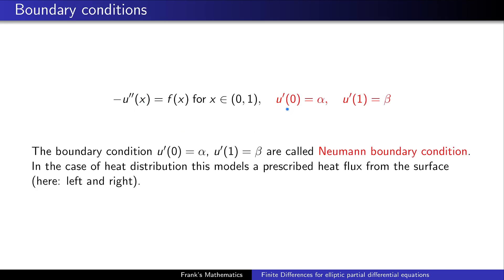So at zero, we impose or we want that u' is equal to a value alpha. And on the point x equals one, it should be equal to a point equals beta. If we assume that we want to model a heat distribution, then this models a prescribed heat flux coming from the surface or here from left and from right to the boundary, could also model the outflow depending on the sign of alpha and beta. And of course, this is straightforward to see because the first derivative of a function u models the change of the function. You know, how fast does a function change its value? Well, you compute the first derivative. That's exactly what you want to model here.